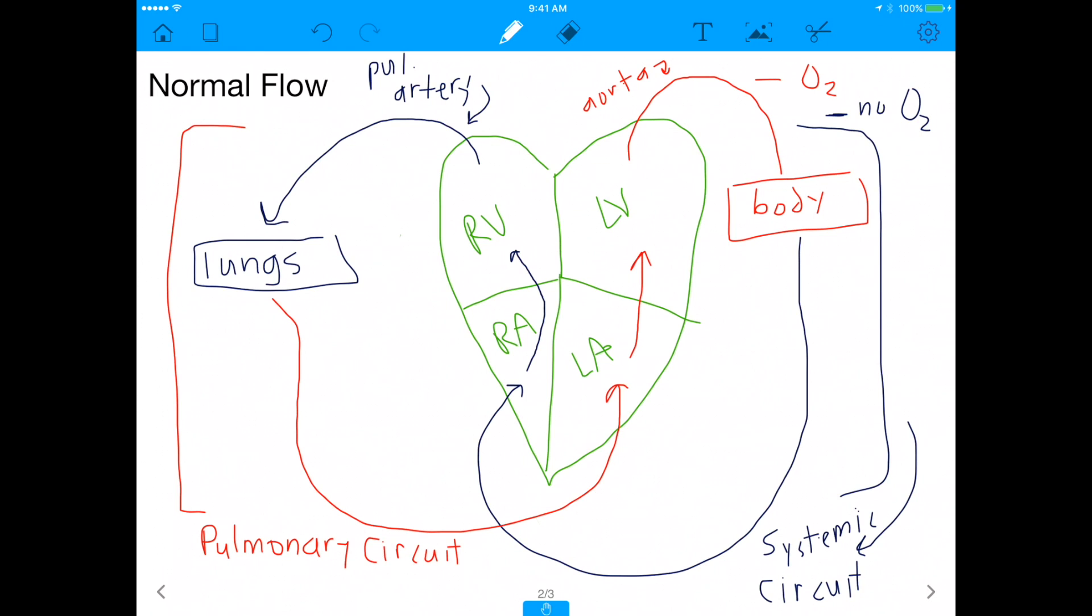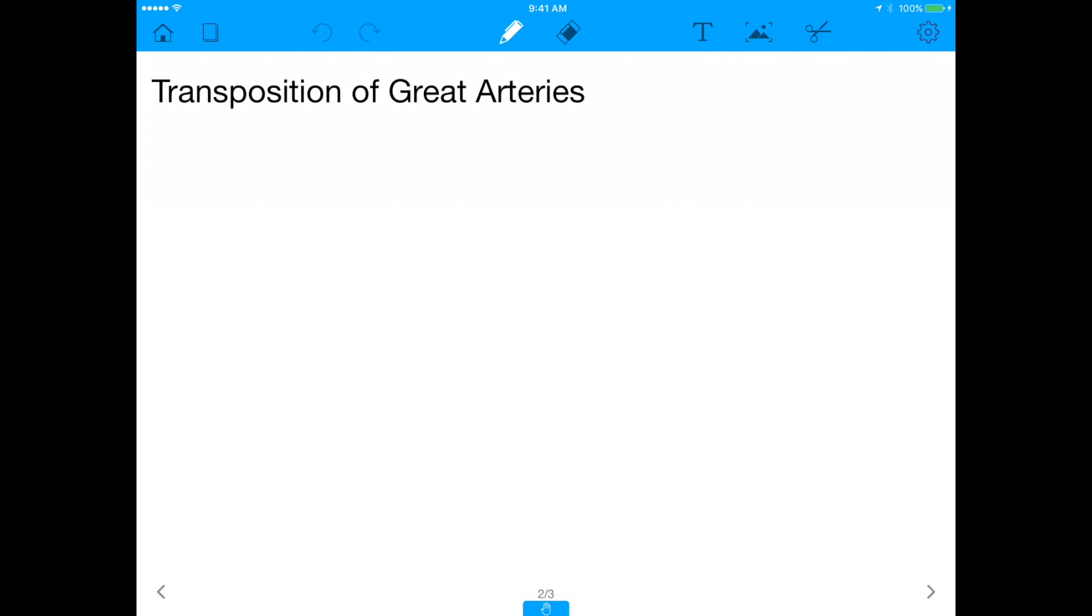But now we can actually go ahead and try to see what's happening in this example. This example is totally different and it's important for us to understand what's happening in this disease state with this transposition of great arteries. So I'm going to draw our heart again. So remember we have our four chambers in the heart: the right ventricle, right atrium, left atrium, left ventricle.